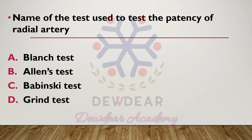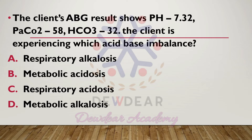Name of the test used to test the patency of the radial artery. Options are: Blanch test, Allen's test, Babinski test, Grind test. The correct answer is option B — Allen's test.